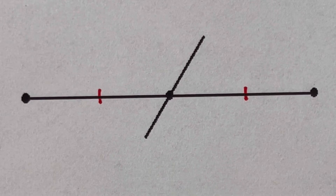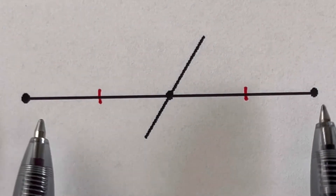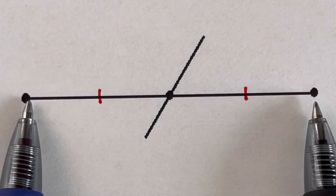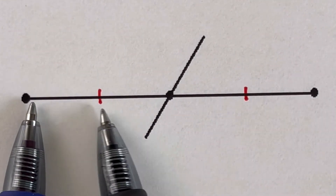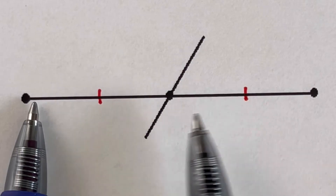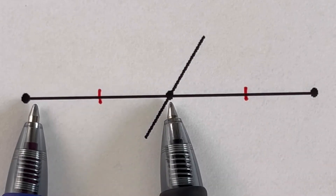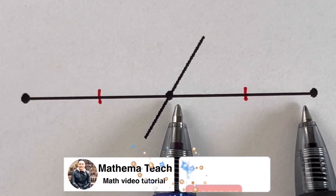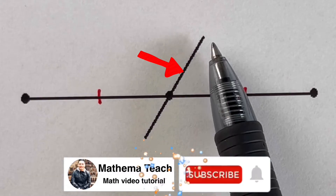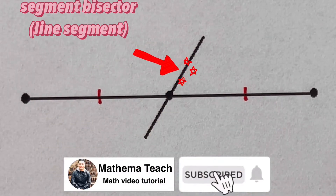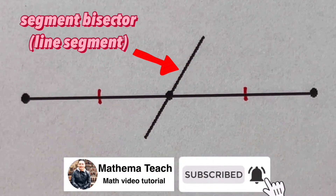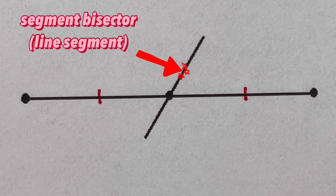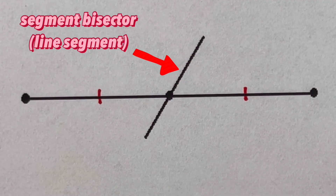In this picture, the segment was cut again into two pieces. The tick marks tell us that the first piece is equal to the second piece, and the one that cuts it is a line segment. So a line segment is also a segment bisector.